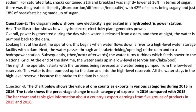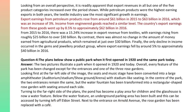The chart below shows the value of one country's exports in various categories during 2015 and 2016. The table shows the percentage change in each category of exports in 2016 compared with 2015. The bar chart and table give information about a country's export earnings from five groups of products in 2015 and 2016. Looking from an overall perspective, export revenues in all but one of the five product categories increased over the period shown. While petroleum products were the highest-earning exports in both years, the textile industry saw the most significant growth in earnings.